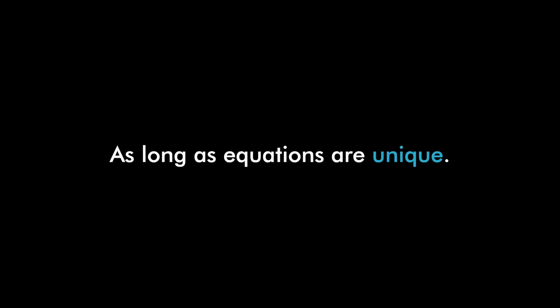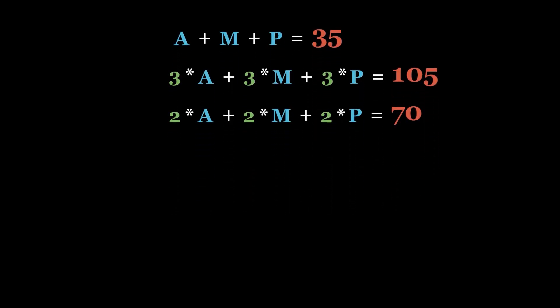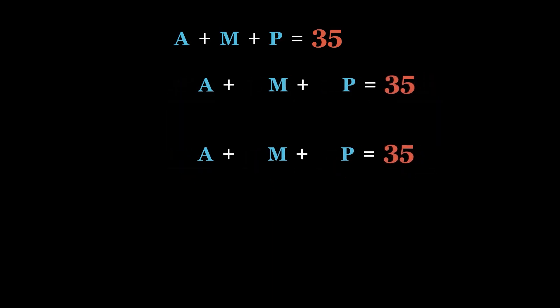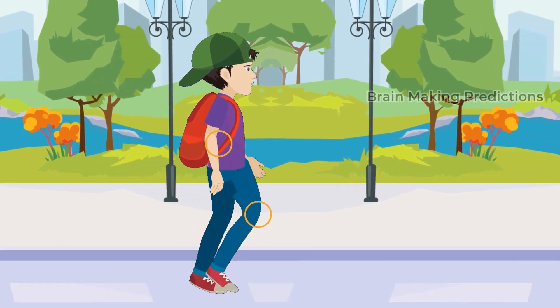We can solve consecutive equations of any number of variables by following the same process, as long as the equations are unique. For example, we cannot find values of a, m, and p from three identical equations. If we divide the second equation by three and the third equation by two, all three become the same equation. We need three different equations to solve a three-variable equation — hence we cannot solve those three equations.